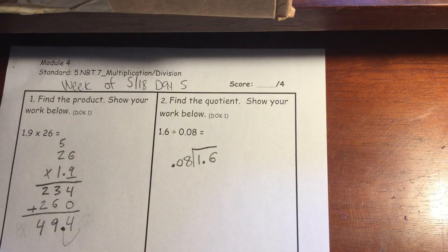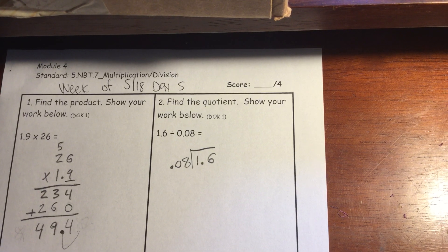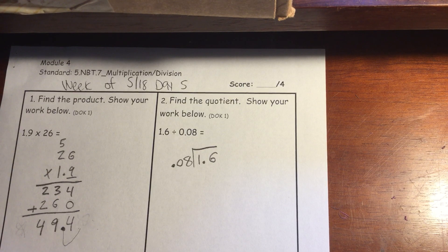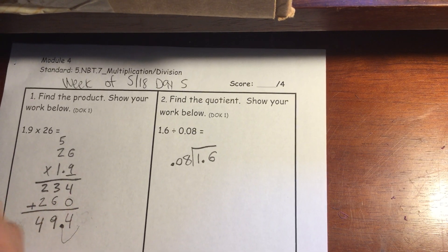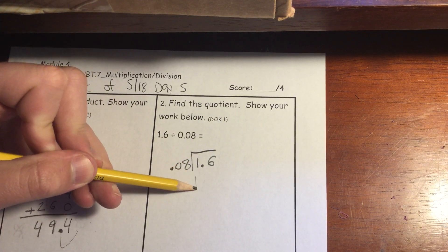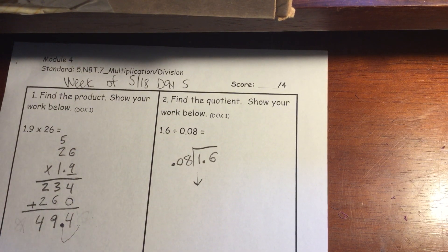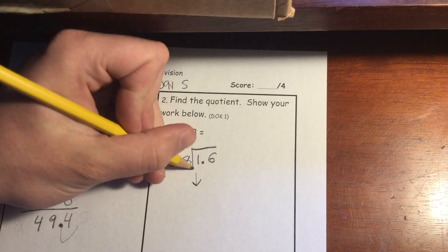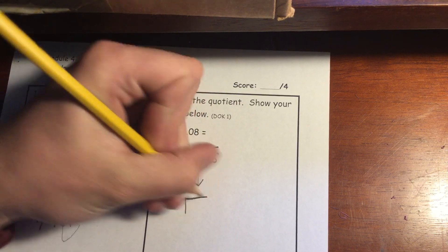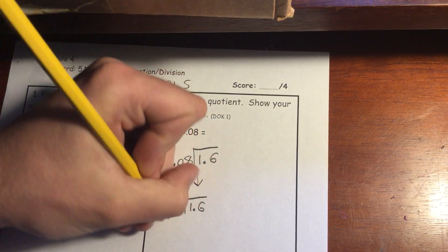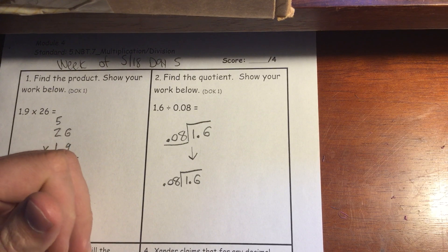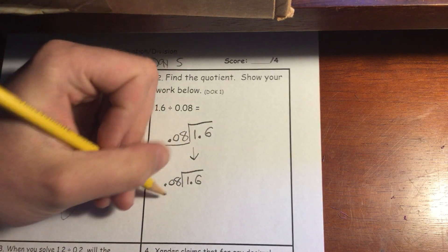Now we're going to look at finding the quotient and showing our work below. The first thing I'm going to do is write this out using standard algorithm, but I'm actually going to rewrite this so I can think about making the divisor — this number I'm dividing by — a whole number. So I'm going to write out 1.6 divided by 0.08. In order to make that divisor, 0.08, a whole number, I'm going to have to move my decimal point two places to the right.